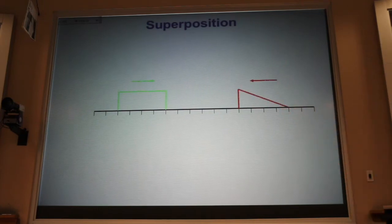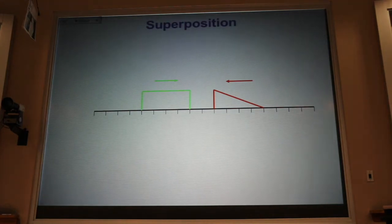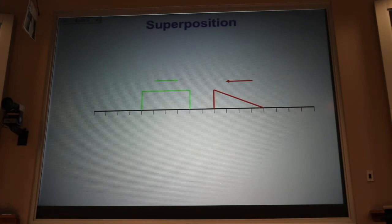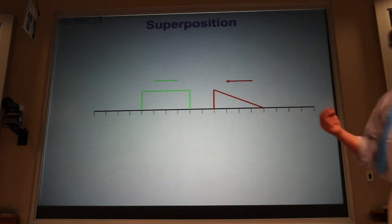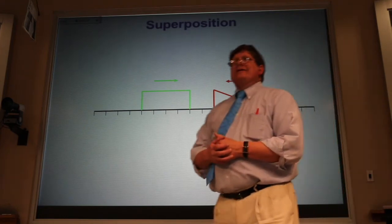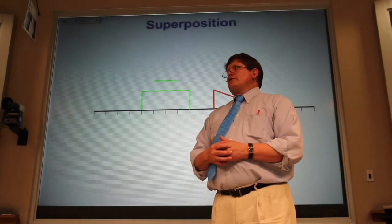When I have two pulses that are coming towards each other on a spring or a string or a rope, they don't bounce off of each other like a solid object would. They pass right through each other. And as they pass through each other, what the string or spring or rope looks like is the sum of the two pulses.